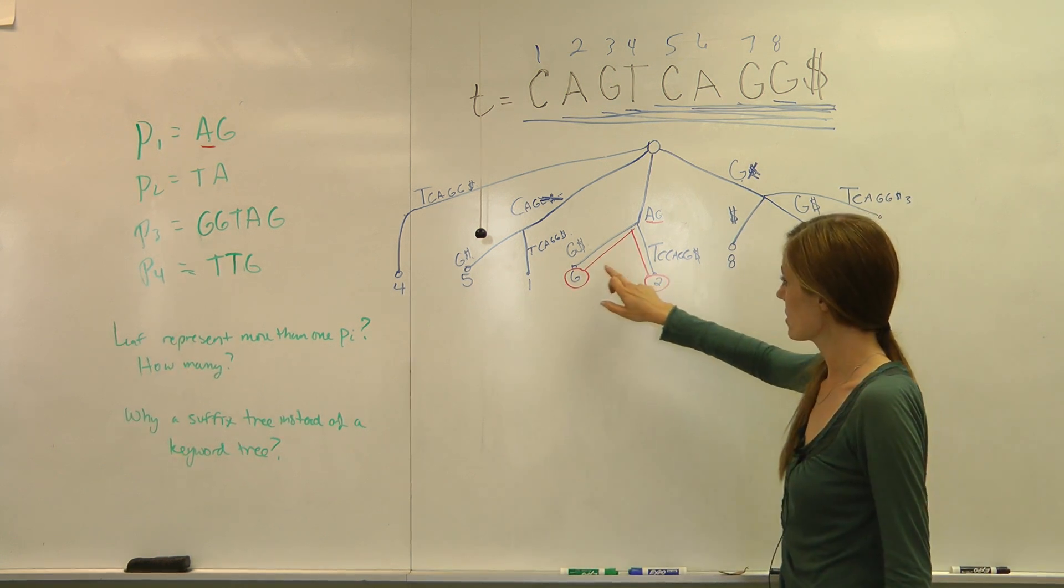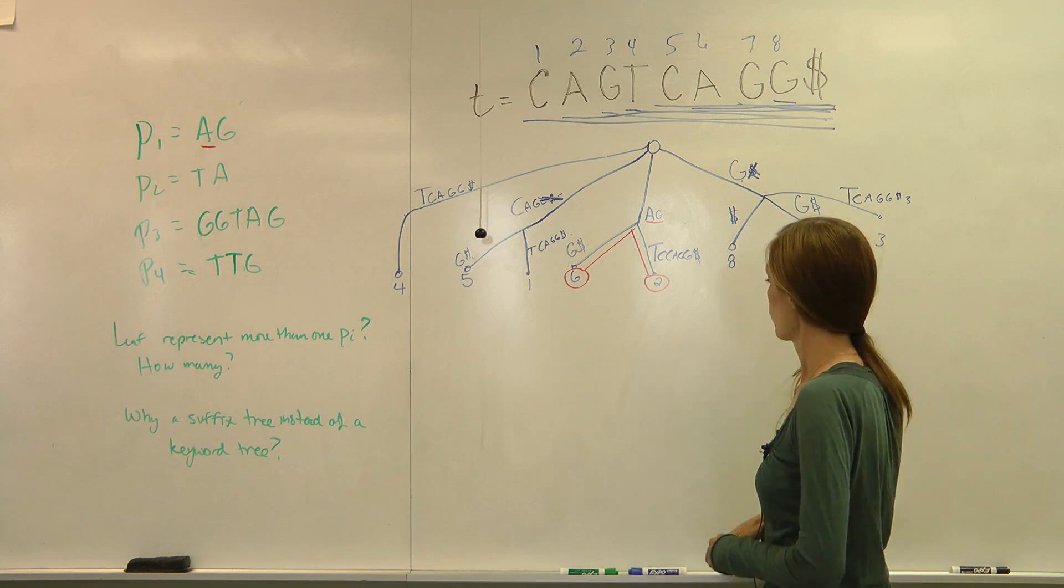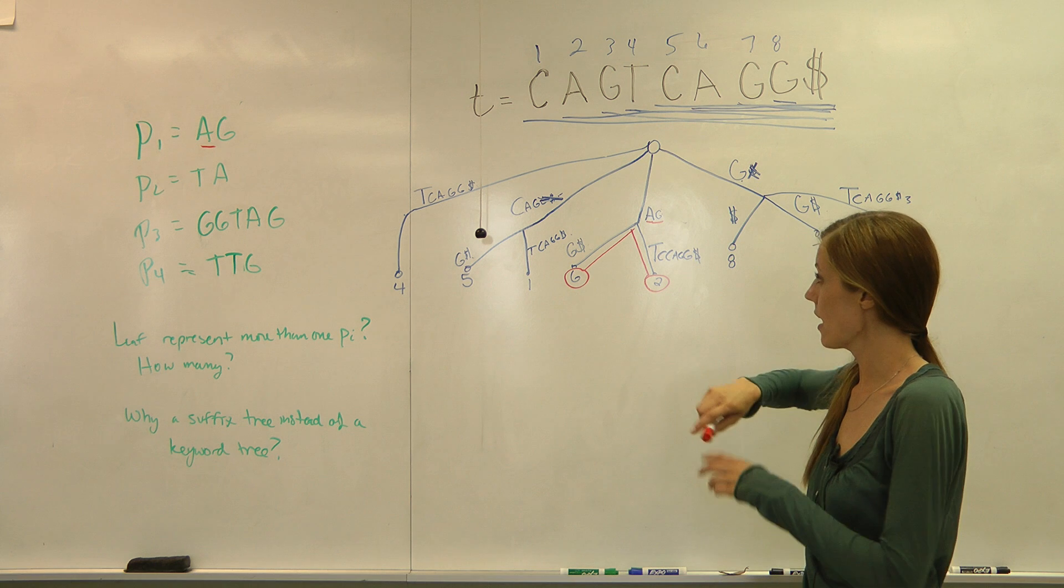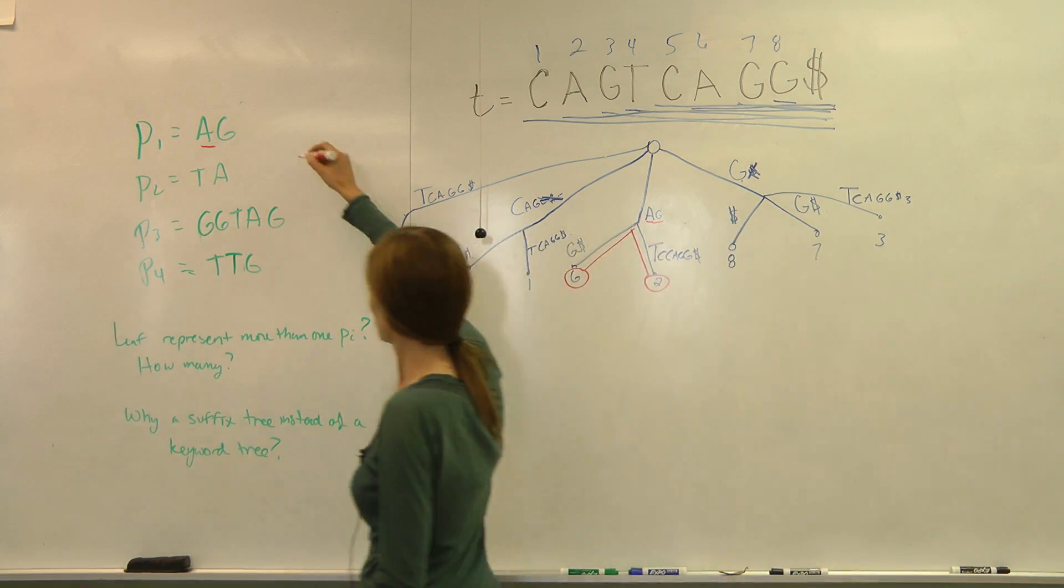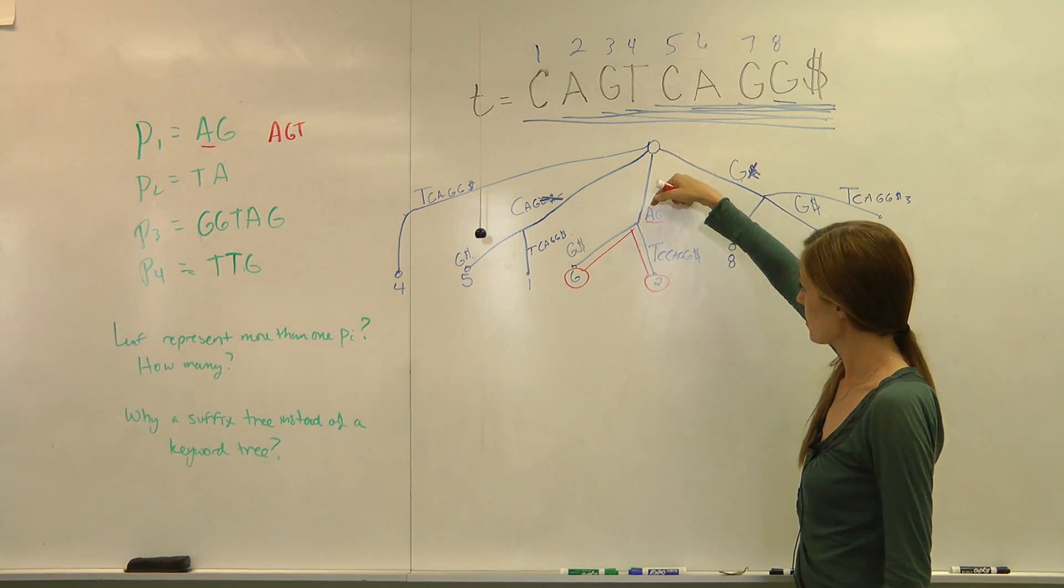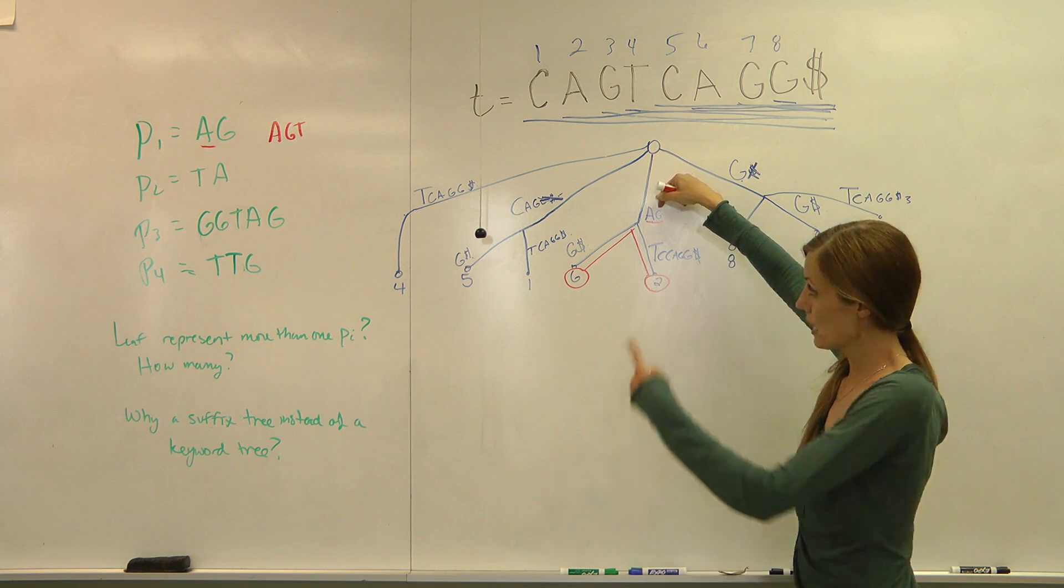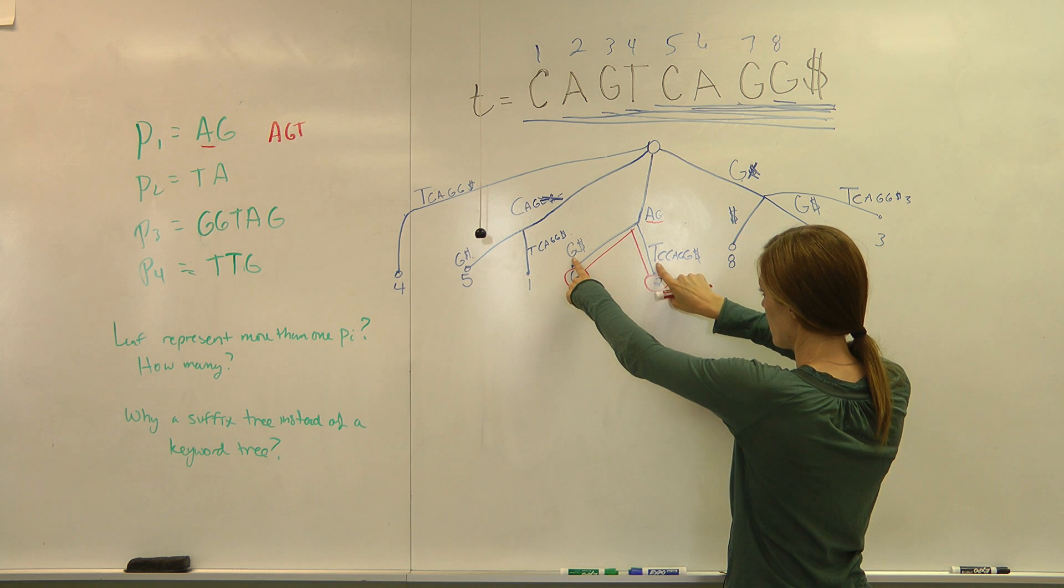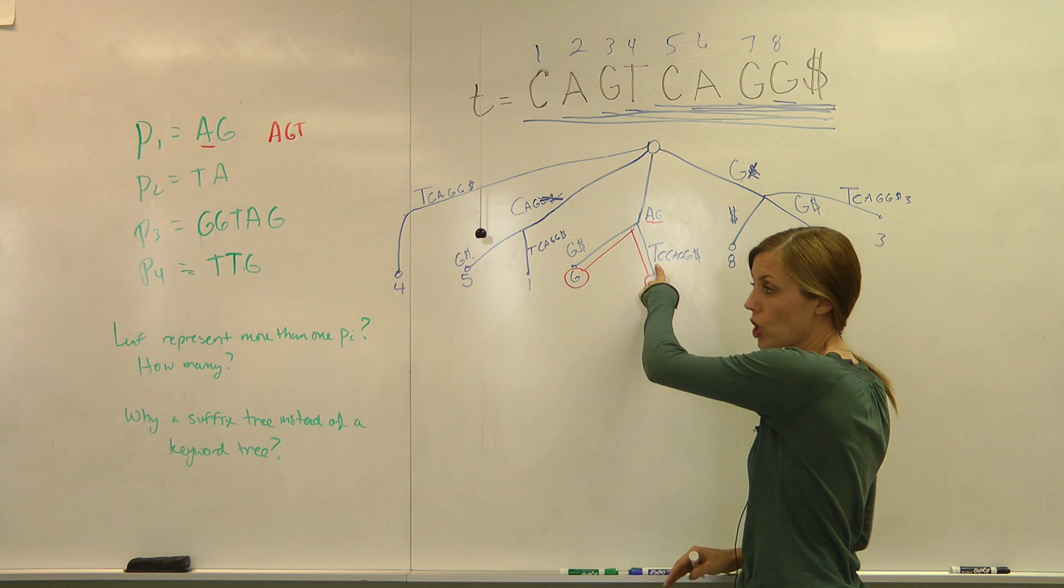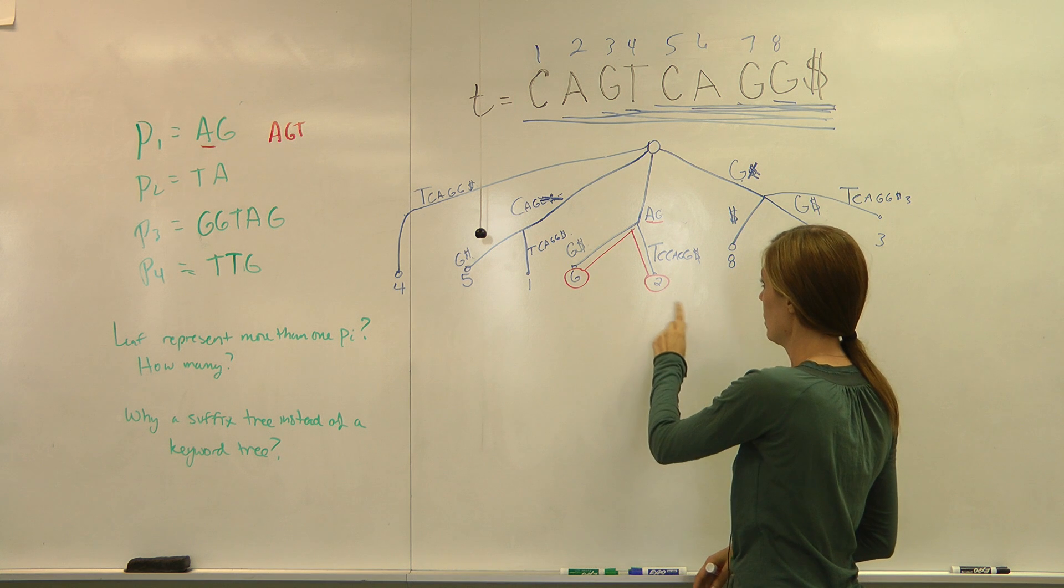So the branches help to exclude certain patterns when patterns get longer. If we were searching for AGT instead, then you would run your A through. Here's an A. Then you'd compare it to your next letter, a G. And then your next letter is T. So you'd check your forks and say, does either of these start with a T? Yeah, this one does. And as soon as you found your pattern, you stop and you go to all the leaves below it. In that case, it would be two.